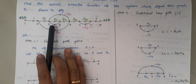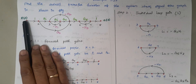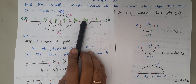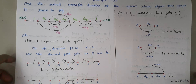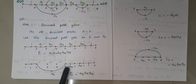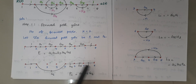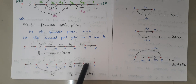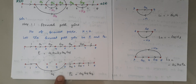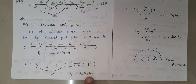There is a second forward path. It starts at node 1, reaches node 2, then jumps to node 5, and continues through nodes 6, 7, and 8. All arrow heads are again moving forward. The gain of this second forward path is 1 × g4 × g5 × g6, represented as P2, where P2 = g4·g5·g6.